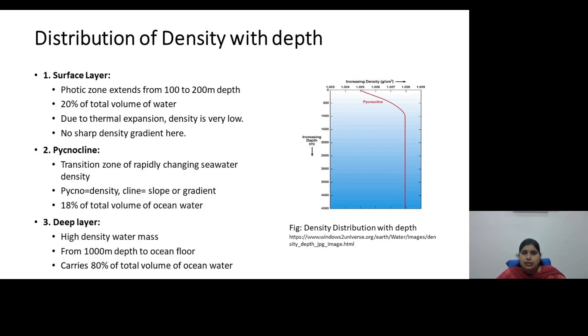The next layer is pycnocline. Here pycnocline refers to density and cline refers to slope or gradient. So this layer is where we have a rapid decrease or a rapid change in density with depth. It is basically a transition zone of rapidly changing seawater density. This layer comprises about 18% of the total volume of ocean water.